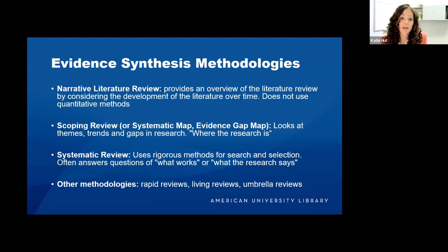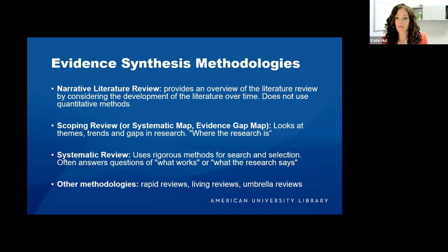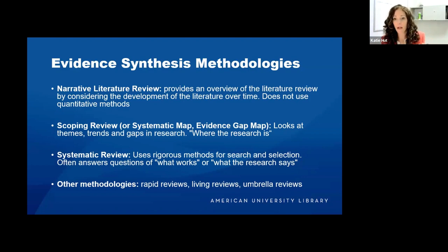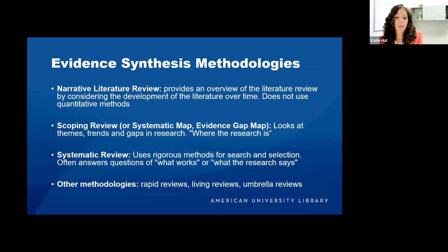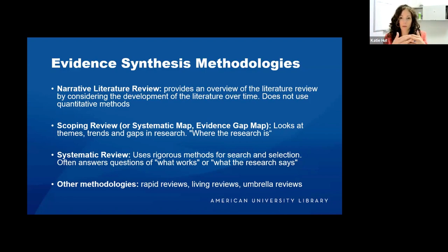The first is the narrative literature review, which provides an overview of the literature considering its development over time, and does not use any quantitative methods — similar to what students might do in class or what you'd read in the introduction of a scholarly article. Then we have a scoping review, which could also be called a systematic map or an evidence gap map. This looks at the themes in research — trends, gaps — surveying the lay of the land overall.